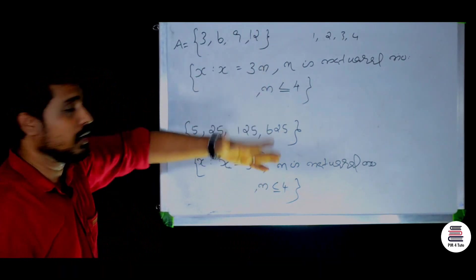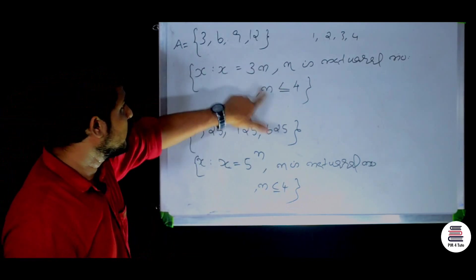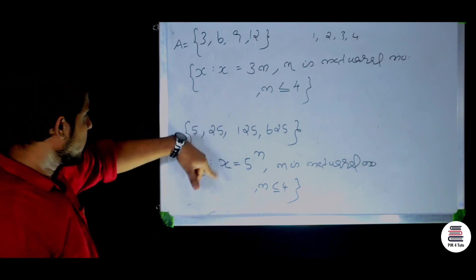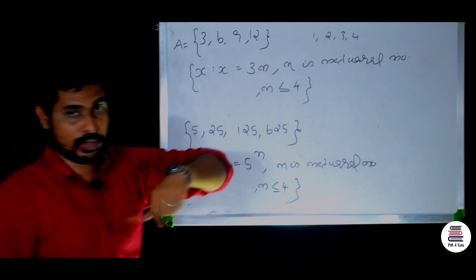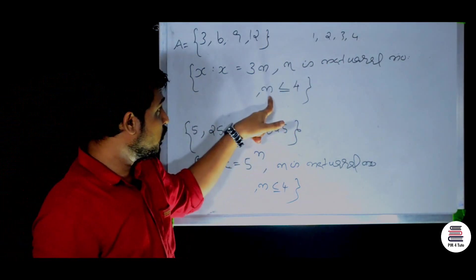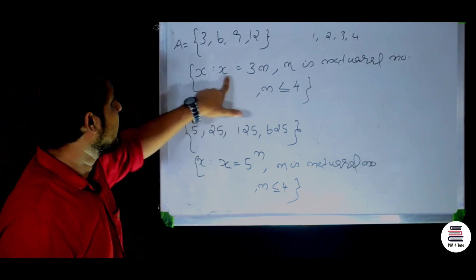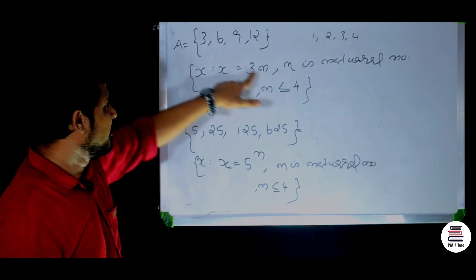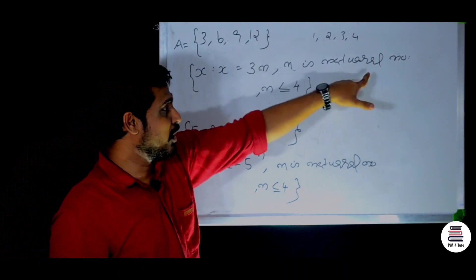An arbitrary element of the set may be written as 3n, where n is a natural number and n is less than or equal to 4. In set builder form: x such that x = 3n, n is a natural number, n less than or equal to 4. When n=1: 3; n=2: 6; n=3: 9; n=4: 12.